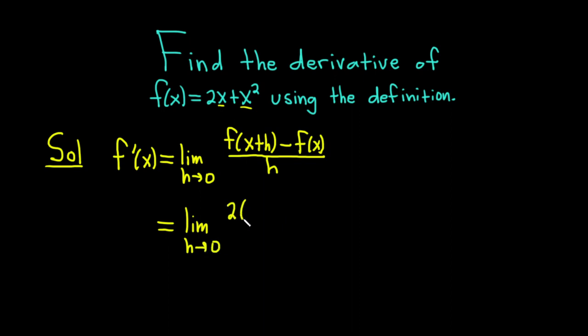So here we have 2 parentheses x plus h, plus, and then x plus h squared. So this whole piece here that I've written, all of this is f of x plus h. That's the only thing I've written down so far.